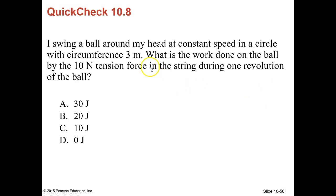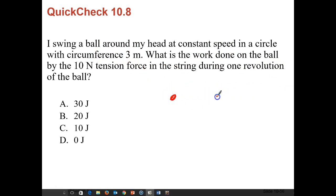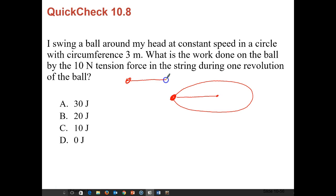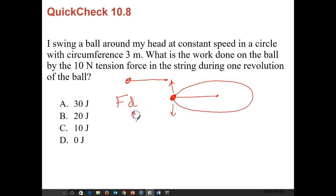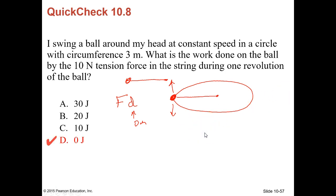Quick check 10.8: I swing a ball around my head at a constant speed in a circle with a circumference of 3 meters. What is the work done on the ball by the 10-newton tension force? The ball is not moving up or down, so there's no work done by gravity. Because the ball travels in a circle and starts and stops at the same point, the net displacement is 0 meters, which means the work equals zero — there is no work done.